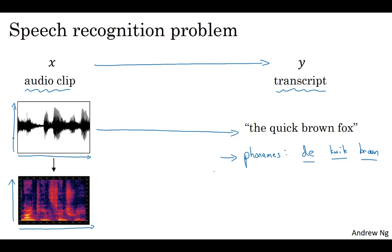One of the things that made this possible was going to much larger datasets. Academic datasets on speech recognition might be 300 hours, and in academia, a 3,000 hour dataset of transcribed audio would be considered reasonable size. But the best commercial systems are now trained on over 10,000 hours and sometimes over 100,000 hours of audio. It's really moving to much larger audio datasets together with deep learning algorithms that has driven a lot of progress in speech recognition.